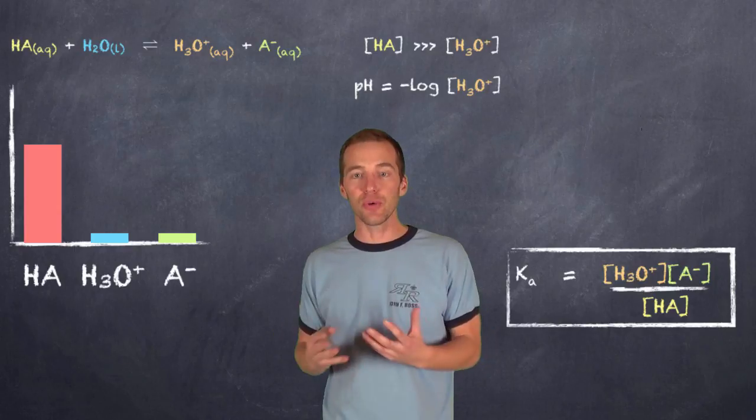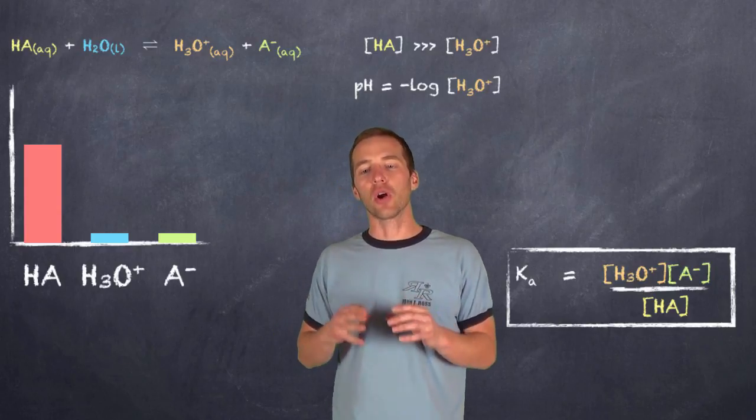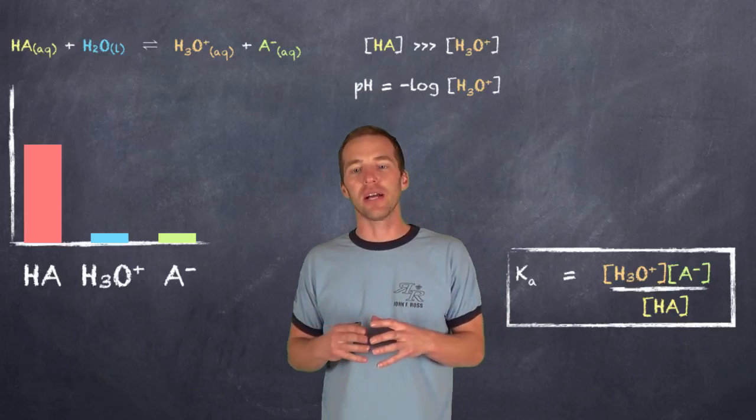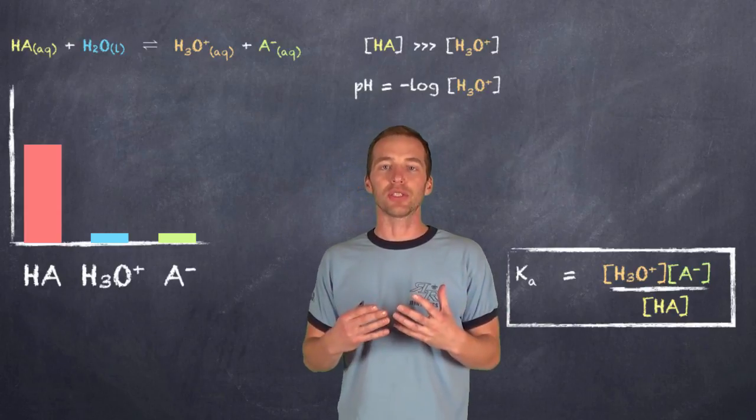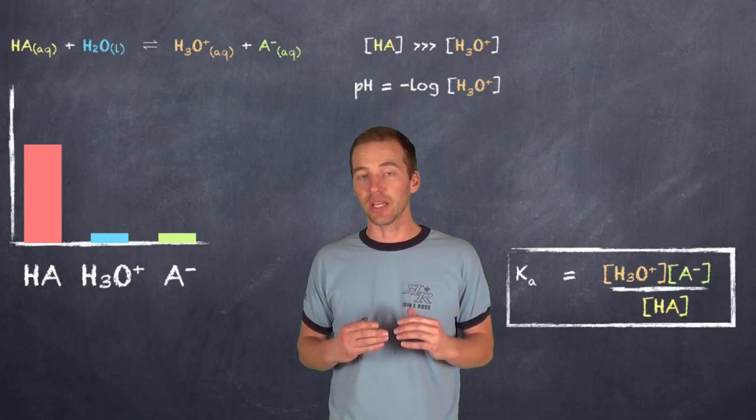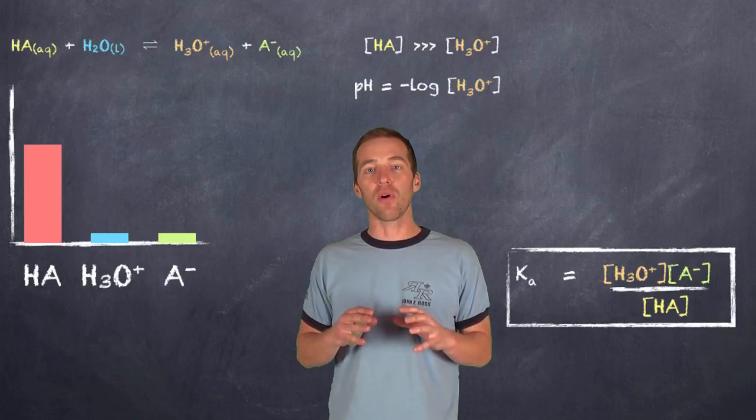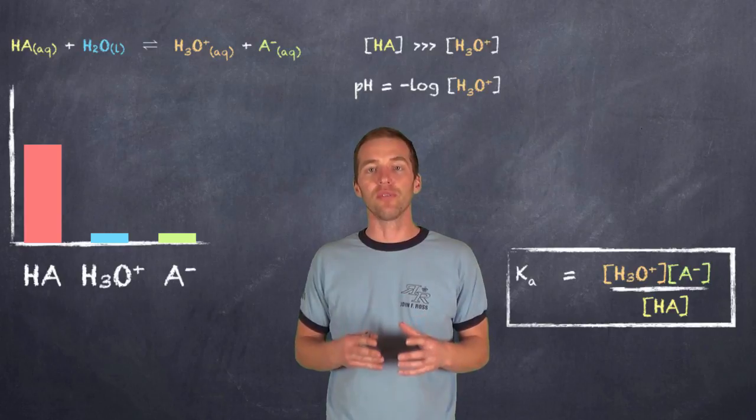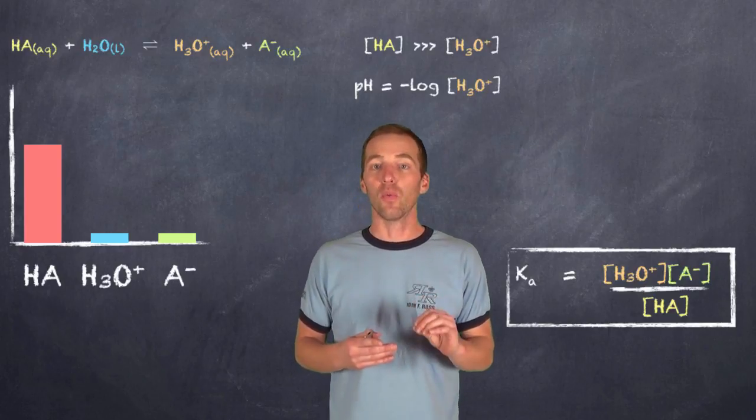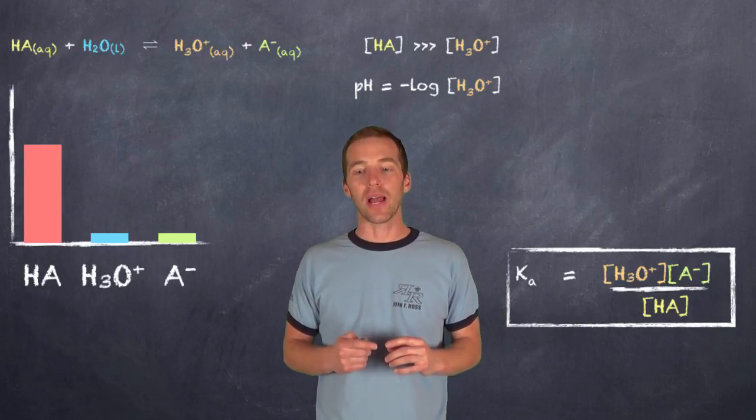And so, what that allows us to do then is figure out the concentration of the hydronium ion using the Ka, using our ice tables, and trying to establish the concentration of the hydronium ion for use in, say, pH calculations. So, it is a little more involved, or you could say a lot more involved, in going through and calculating these values to establish pH for a weak acid than it is for a strong acid.